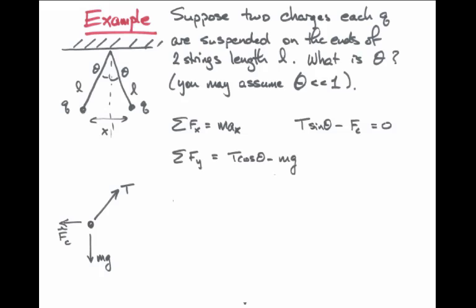We may also write Newton's second law in the y-direction, which is up and down, and there are two forces in the y-direction. There is mg pointing down in the negative direction, and there is a component of the tension pointing up, and that component will be T times cosine theta. Again, if the object is not moving, we know that this sum of forces must equal zero, because the acceleration in the y-direction is zero, just like in the x-direction.